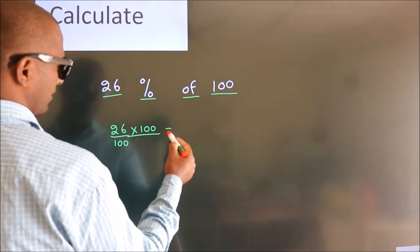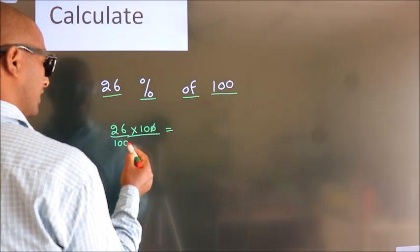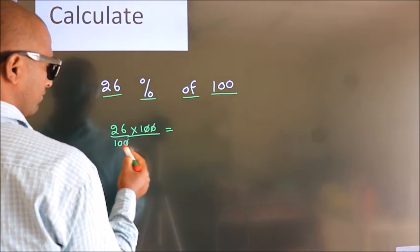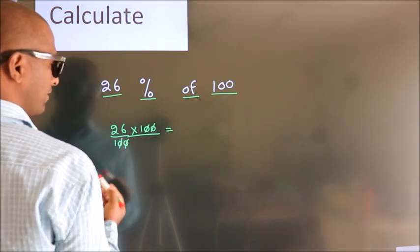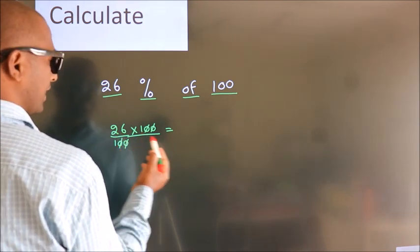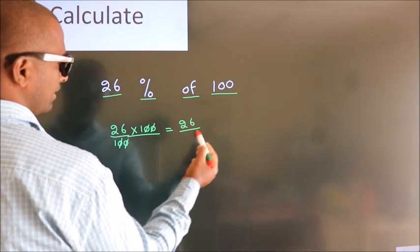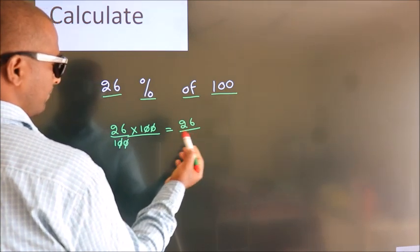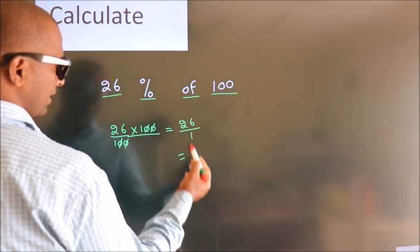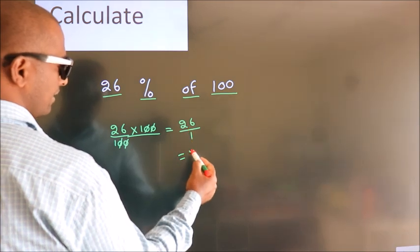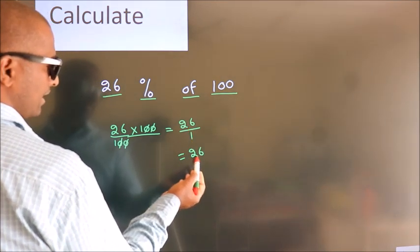Next, I cancel this 0 with this, and this 0 with this. We are left with 26 into 1, which is 26. In the denominator, 1. So 26 by 1 equals 26. This is our answer.